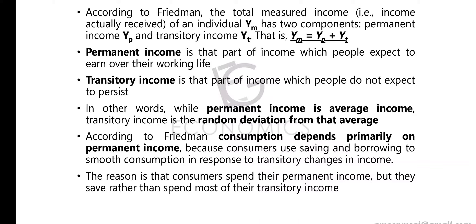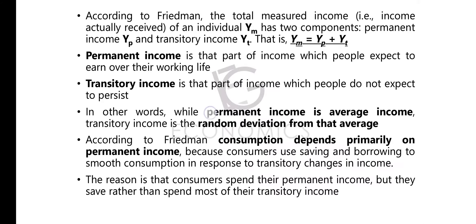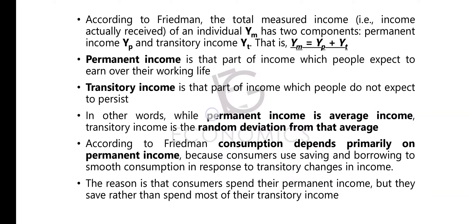For example, some sort of bonus that you get in a particular year but will not be earning in the next coming year — some gifts or donations — those are termed as transitory income.